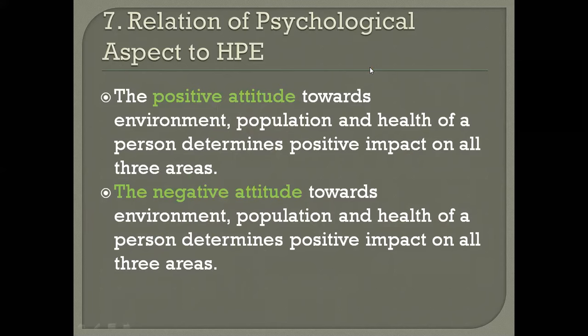People having a positive attitude and positive behavior will try to improve their health, control the population, and conserve the environment. Whereas people having negative attitudes and behavior will not try to control population, will not try to improve their health, and will not try to conserve the environment.